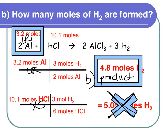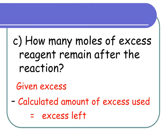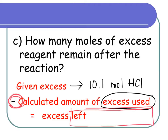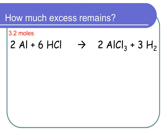Part C asks how many moles of excess remain after the reaction. We always start the excess step with the limiting reactant. With 3.2 moles of aluminum, we convert to moles of HCl using the mole-to-mole ratio: 6 moles HCl for every 2 moles of aluminum.